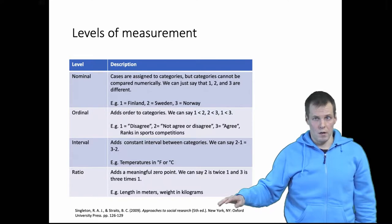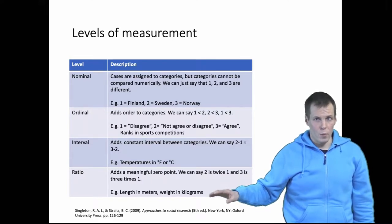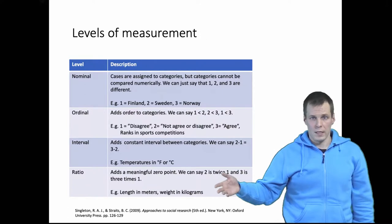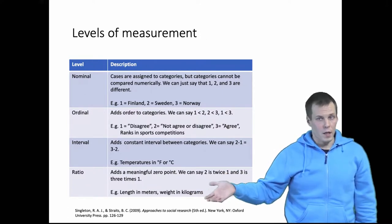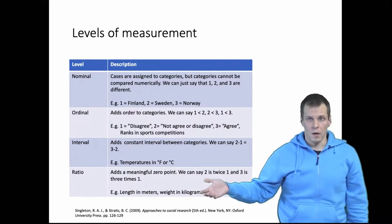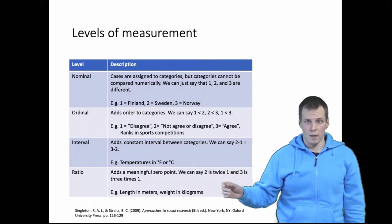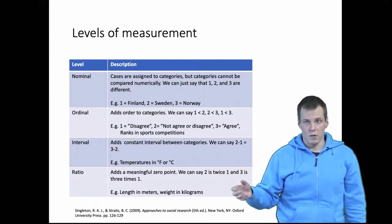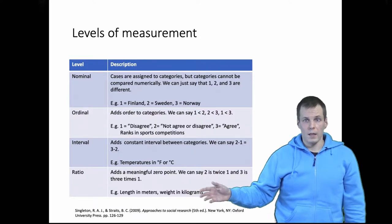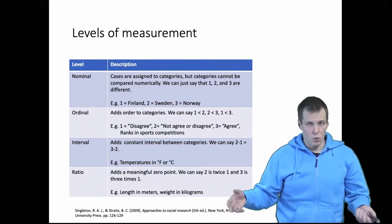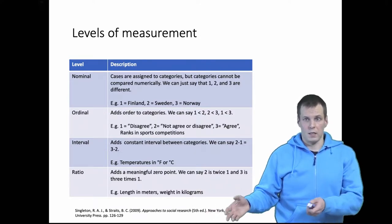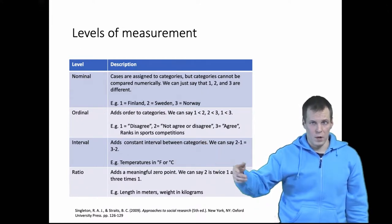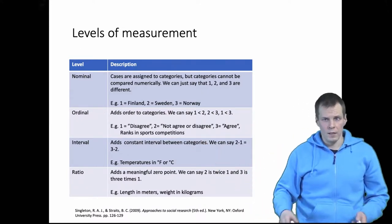A meaningful zero point means we have a zero which represents an absence of a quantity. For example, length in meters or weight in kilograms is a ratio scale because zero means the weight is non-existent or the length is non-existent. We can say that two kilos is twice as much as one kilo, but we can't say that two Fahrenheit is twice as much as one Fahrenheit — that doesn't make sense.